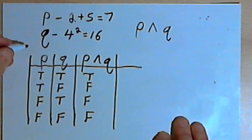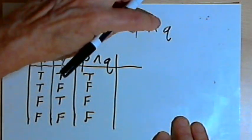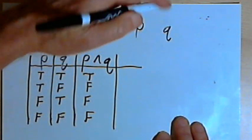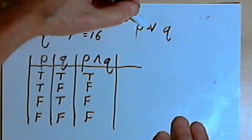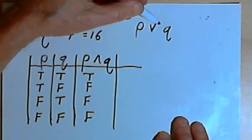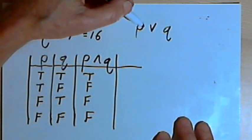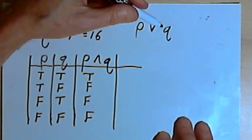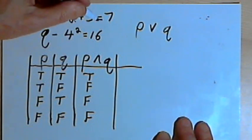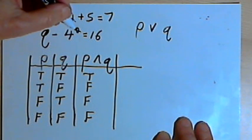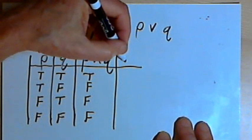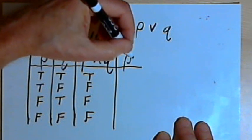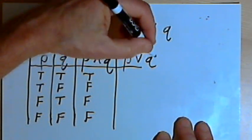Besides conjunction, I can combine two statements with what's called disjunction. To do that I'm going to write P, then a V-shaped symbol, and Q. This is read as P or Q — in other words, 2 plus 5 equals 7 or 4 squared equals 16. I'll make a column for that one also: P or Q.